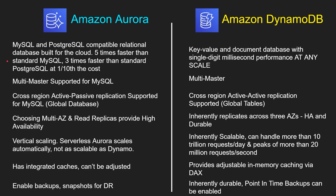Amazon Aurora is a MySQL and PostgreSQL compatible relational database built for the cloud. It is five times faster than standard MySQL and three times faster than standard PostgreSQL at one-tenth the cost. Amazon DynamoDB is a key-value and document database with single-digit millisecond performance at any scale. Amazon Aurora supports multi-master — in the event of instance or availability zone failures, multi-master enables Aurora to maintain read and write availability with zero application downtime. However, multi-master for Amazon Aurora is currently only supported for MySQL, not PostgreSQL.